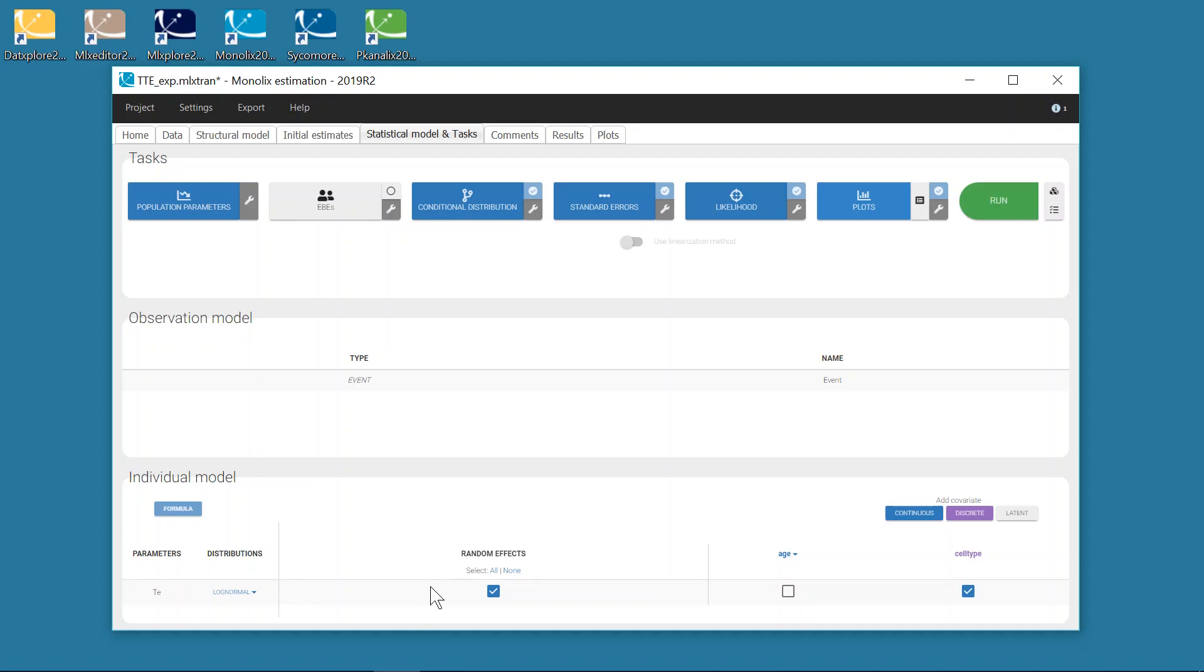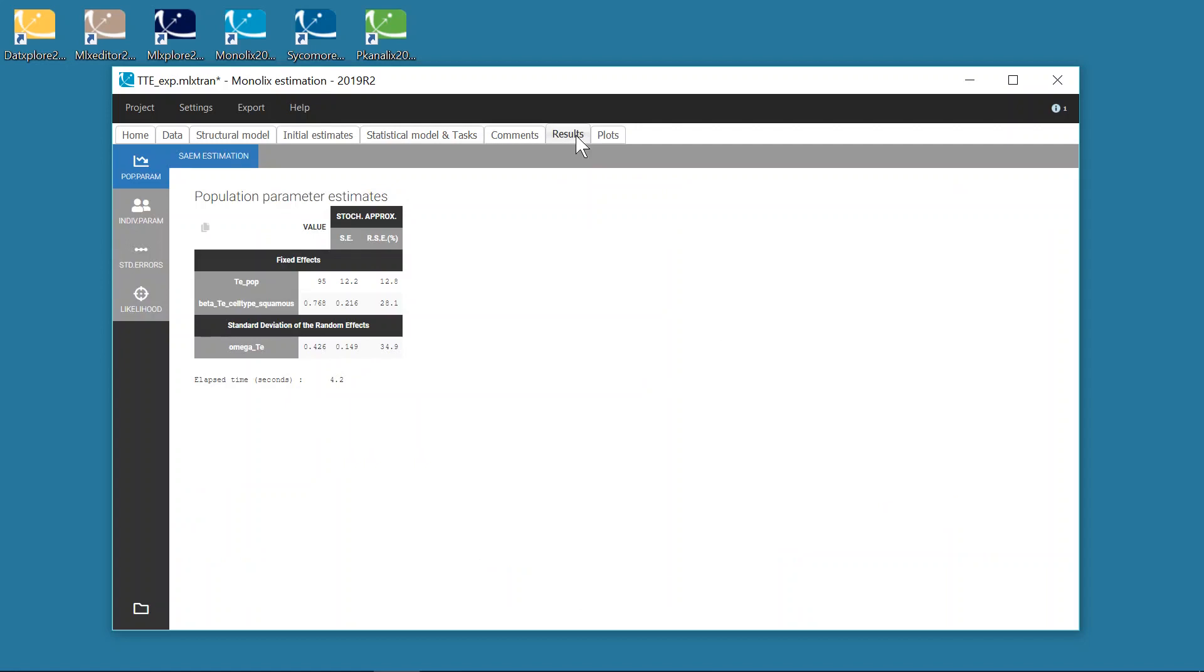Although this is an unusual approach for survival data, in Monolix it is convenient to consider random effects, in particular for scale parameters such as TTE, as in frailty models, because it can facilitate convergence. It also allows using statistical tests to guide the covariate model development. Here, I have already added a covariate effect of cell type on TTE. All the results are the same as in the continuous case.